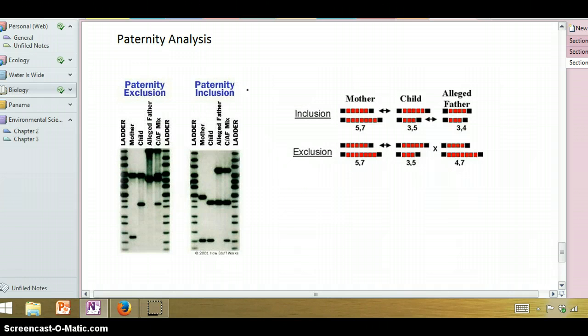Essentially, the child is going to inherit - remember that we're diploid - the child is going to inherit one copy from mom and one copy from dad. Mom is diploid, she has two copies. Dad is diploid. The baby inherits one from mom and one from dad.